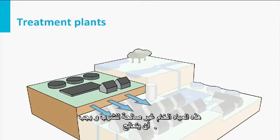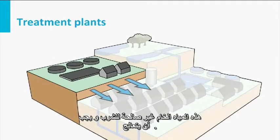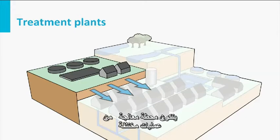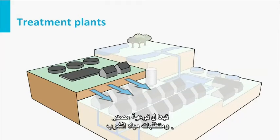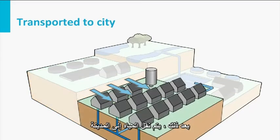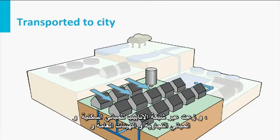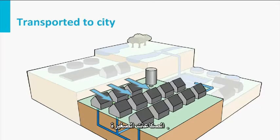This source water isn't drinkable and must be treated. The treatment plant consists of different processes depending on the quality of the source and the requirements for drinking water. Afterward, the water is transported to the city and distributed via a piped network to households, commercial buildings, public entities and small industries.